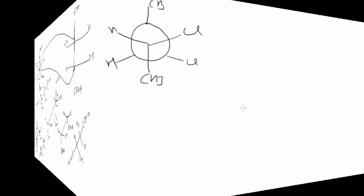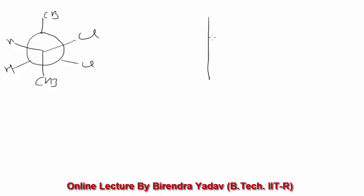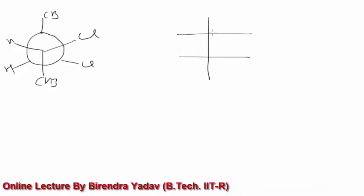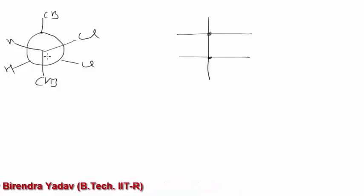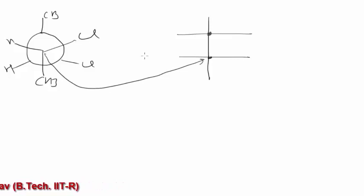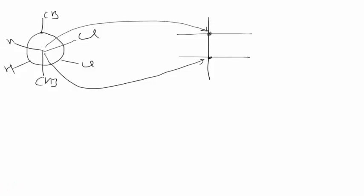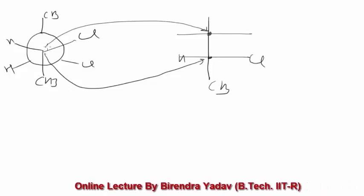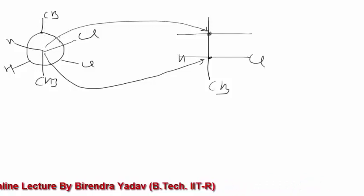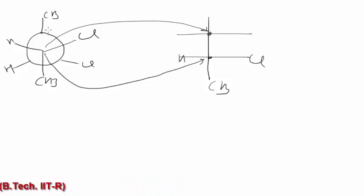Let me take an example. See this Neumann projection — we have to convert it into Fischer. We will draw two horizontal lines like this. This is the chiral carbon and this is the chiral carbon. The front carbon is here, the back carbon is here. For the front carbon, you can see methyl down, H left, Cl right — so I will write CH₃ here, H here, Cl here. For the back carbon, CH₃ is up. We have to keep the Neumann projection in eclipsed form, so we rotate the back carbon and bring CH₃ down. When you do that, Cl will come left, H will come right, and CH₃ at the top.